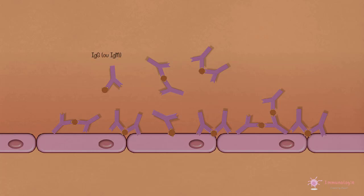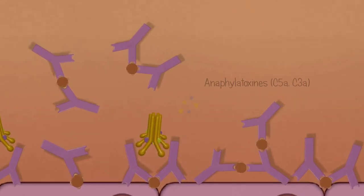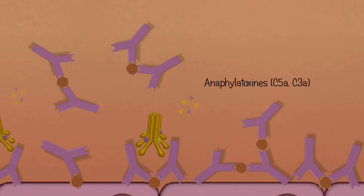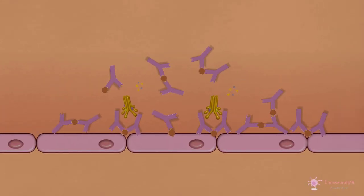Les complexes contenant des IgG et des IgM activent le système du complément par la voie classique, entraînant la production de sous-produits du complément, les anaphylatoxines. Le C3A et le C5A recrutent les leucocytes et stimulent l'inflammation.